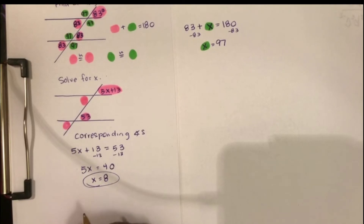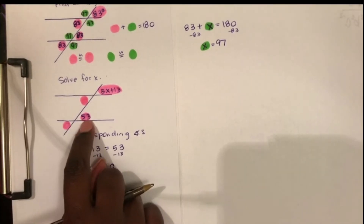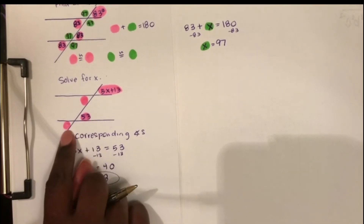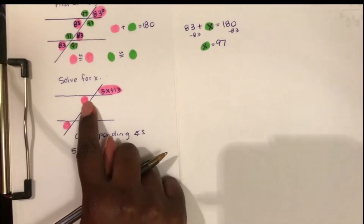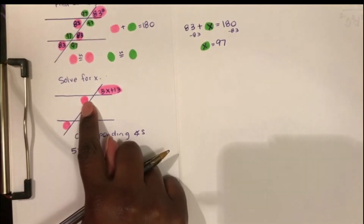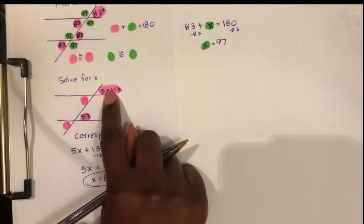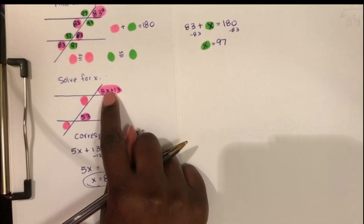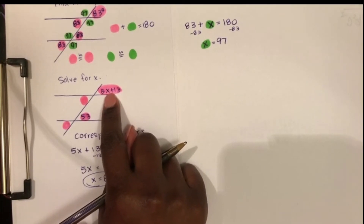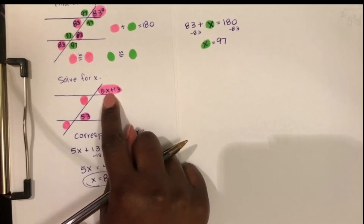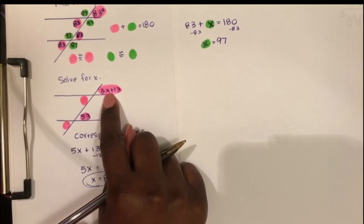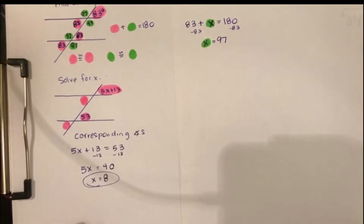Also for a problem like this, we already know all of the pink angles are equal to 53 degrees. So if the question asks us to find the measure of the top right angle, we know that angle is 53 degrees.